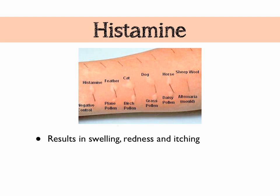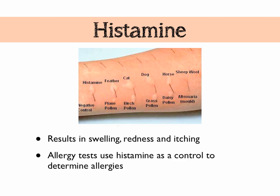This diagram shows an allergy scratch test, where histamine is used as a positive control — we compare against histamine to assess the allergy. This person has been scratched with pure histamine, some different possible allergens, and a negative control such as distilled water. The doctor can compare reactions for each allergen against the positive and negative controls. This person appears quite allergic to feathers, cats, dogs, and horses, with some reaction to daisy, grass, and birch pollen, very little to plain pollen, and no discernible allergy to sheep's wool or alternaria, which is a kind of mould.